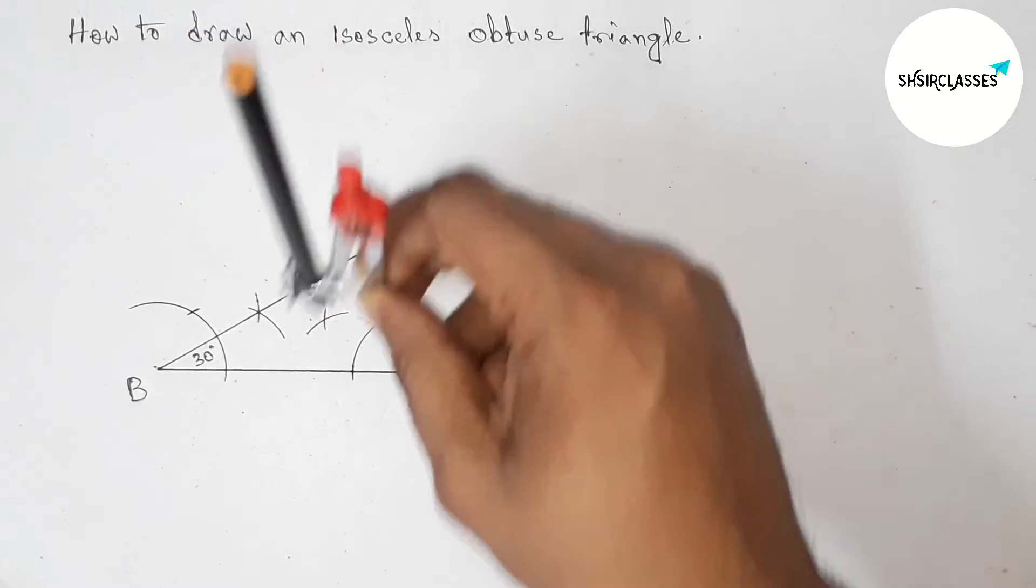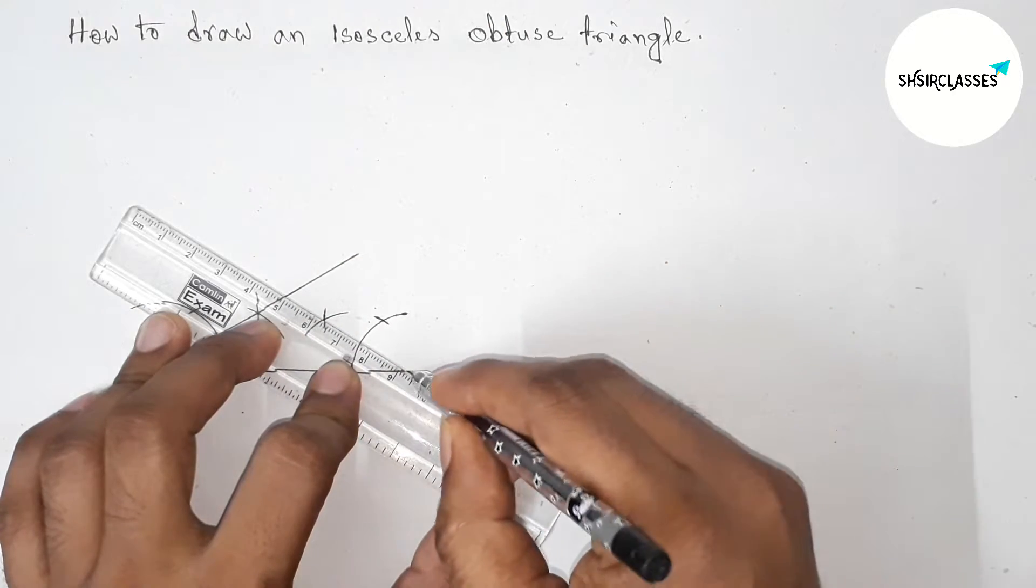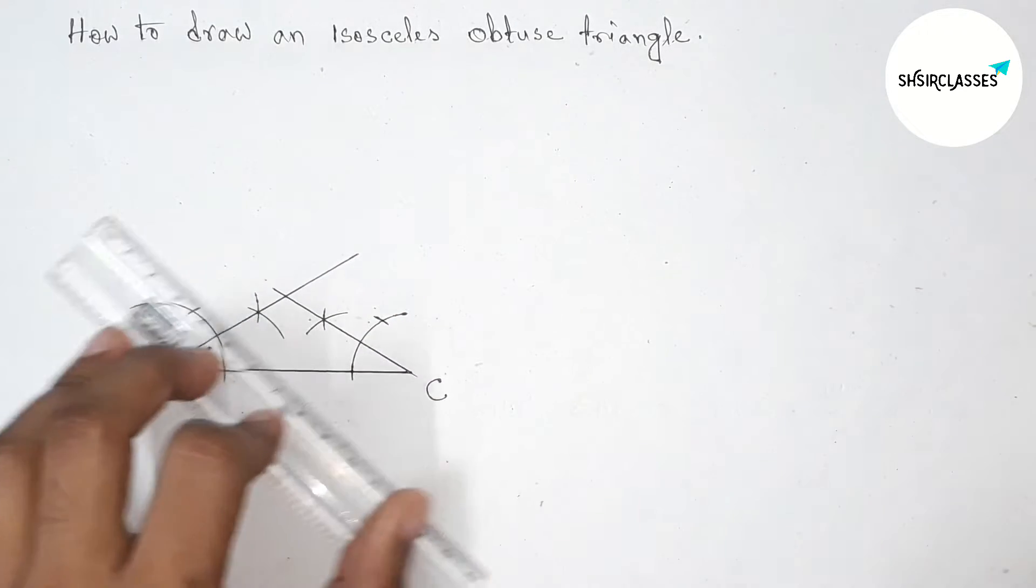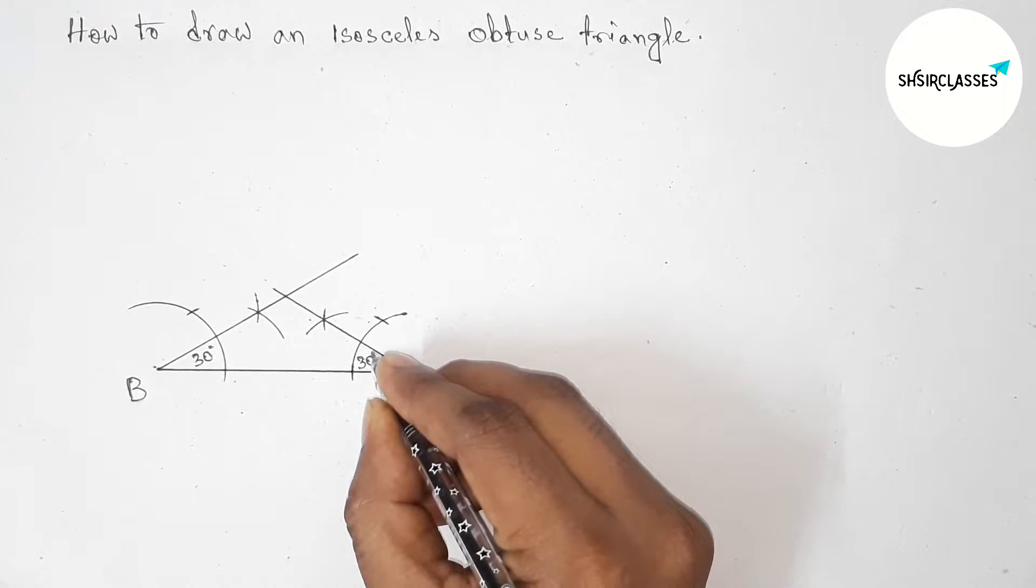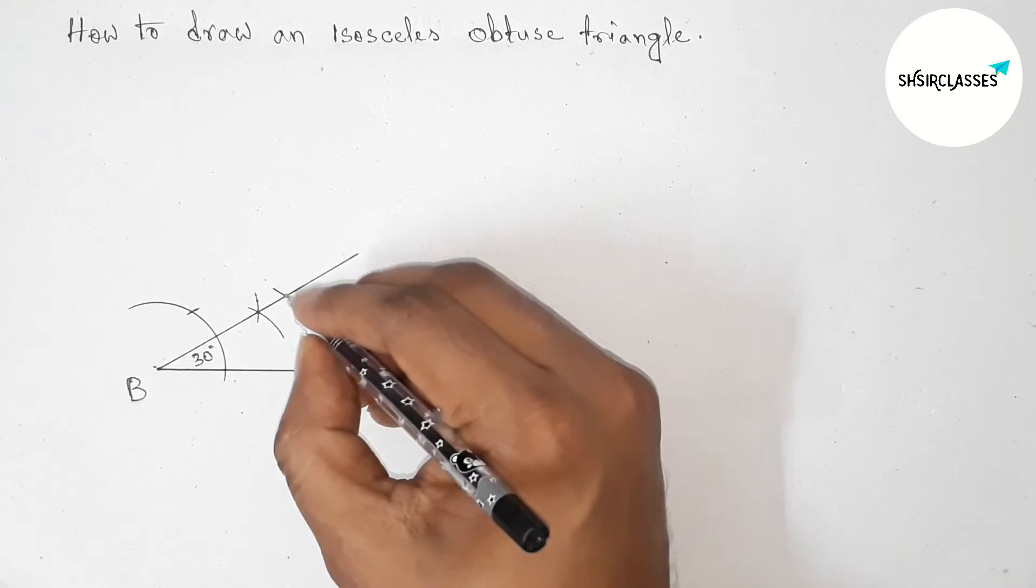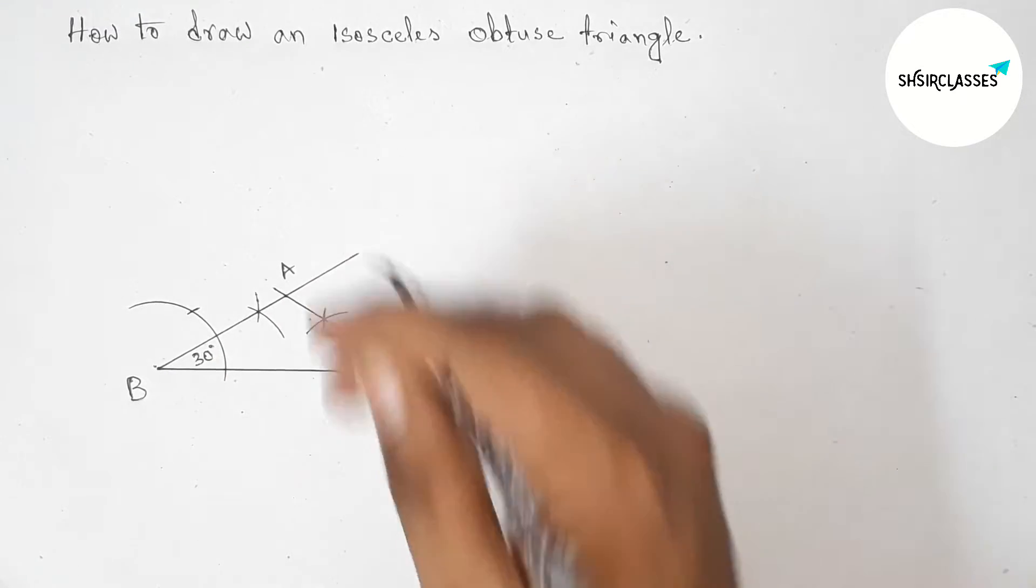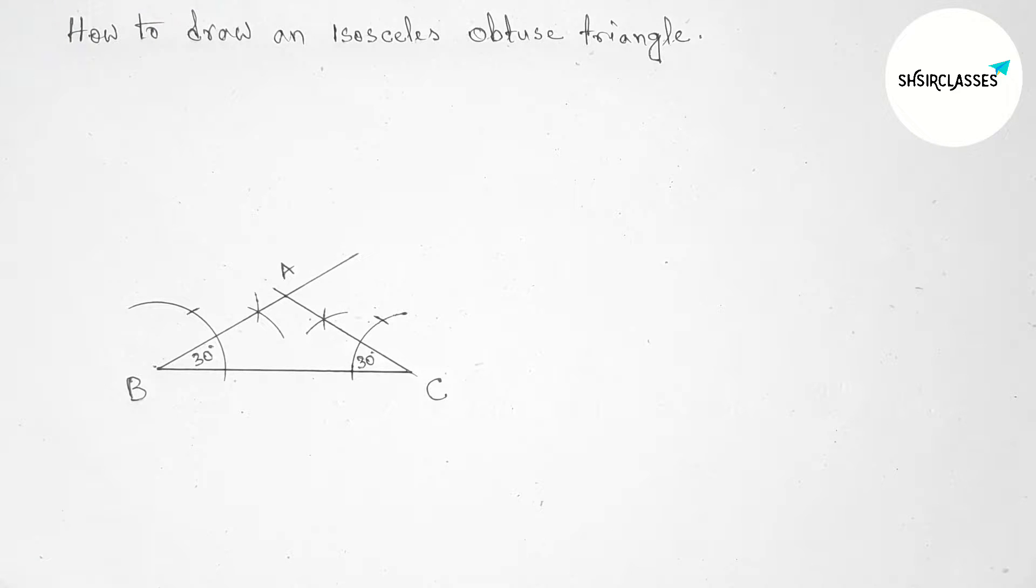Now joining this line so both the lines meet here at a point. This angle C is also 30 degrees and meet here at a point, so taking point A. Now measuring the angle A with the help of protractor.